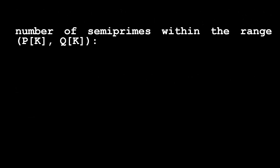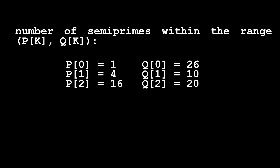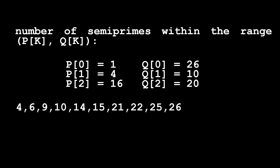In this problem we are given two arrays P and Q which represent the boundaries within which we are going to look for semiprime numbers. For example, taking the first couple of numbers 1 and 26, the semiprime numbers from 1 up to 26 are 4, 6, 9, and so on. Between 1 and 26 we have 10 different semiprime numbers, and we will keep this number in memory for the moment.